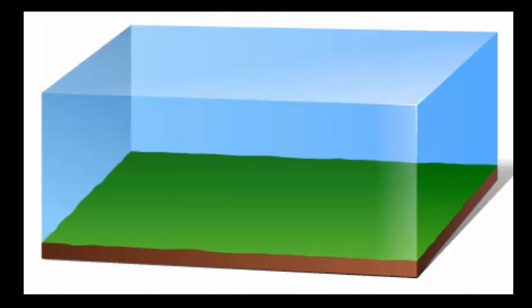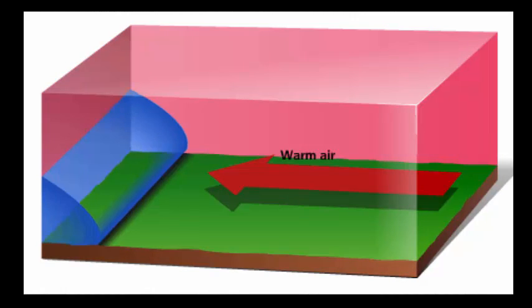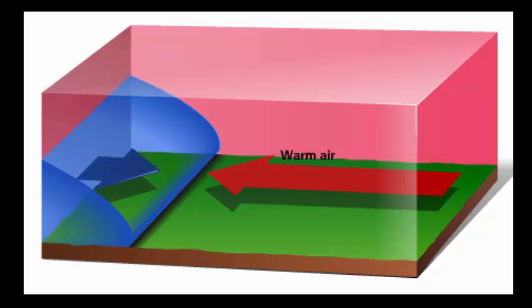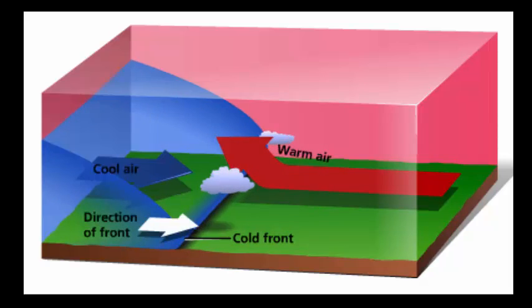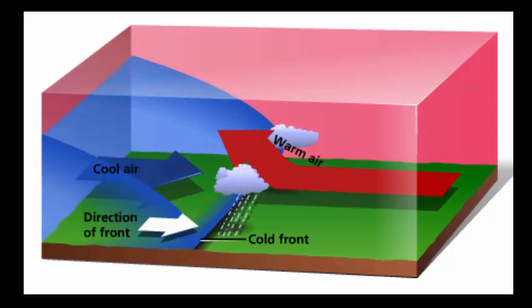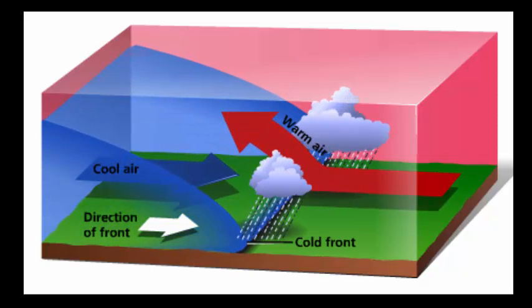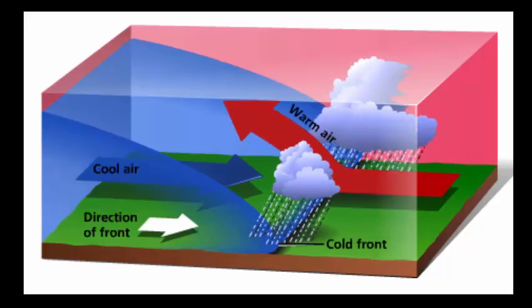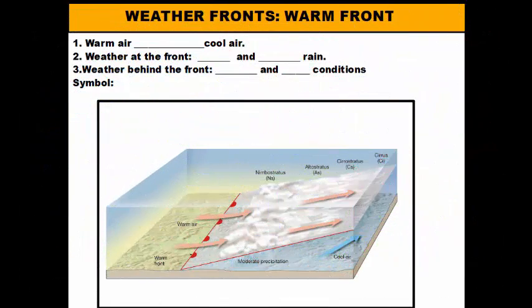Here we are in our open field of warm air, and on the left we have an approaching cold air mass. Since the cold air is more dense it stays on the ground and slides underneath the warm air, lifting the warm air. The water vapor in the warm air then condenses to form thunderstorm clouds that bring us heavy precipitation and storms. I hope that animation helps you understand what happens during a cold front.